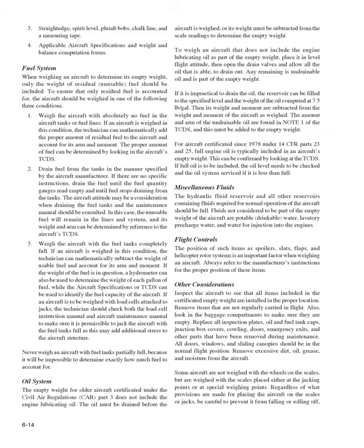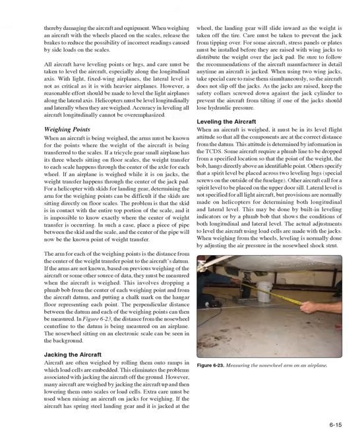Other Considerations: Inspect the aircraft to ensure all items included in the certificated empty weight are installed in the proper location. Remove items not regularly carried in flight and check baggage compartments are empty. Replace all inspection plates, oil and fuel tank caps, junction box covers, cowling doors, emergency exits, and other parts removed during maintenance. All doors, windows, and sliding canopies should be in normal flight position. Remove excessive dirt, oil, grease, and moisture. When weighing with wheels on scales, release the brakes to reduce incorrect readings from side loads.